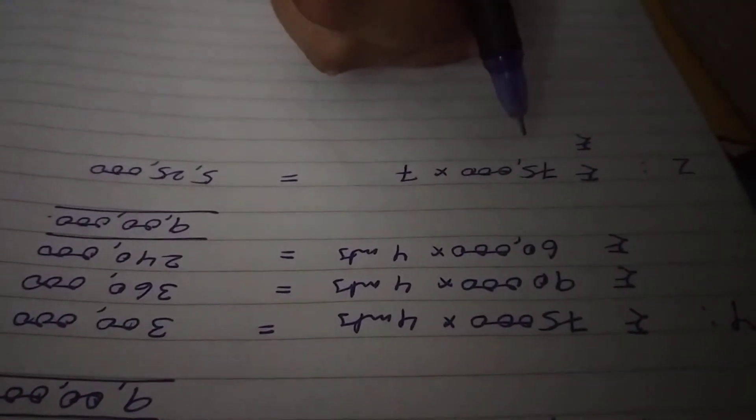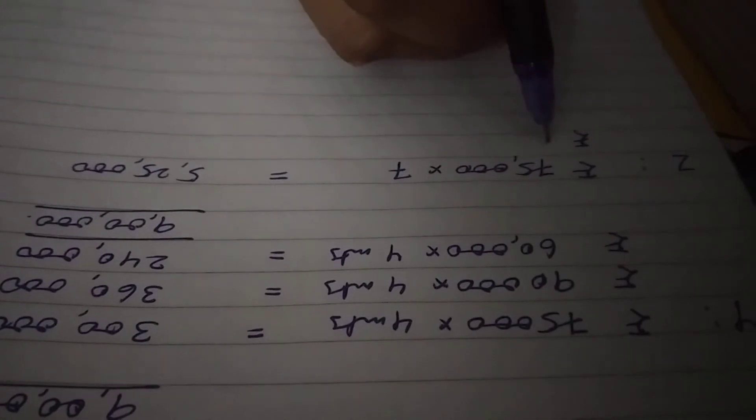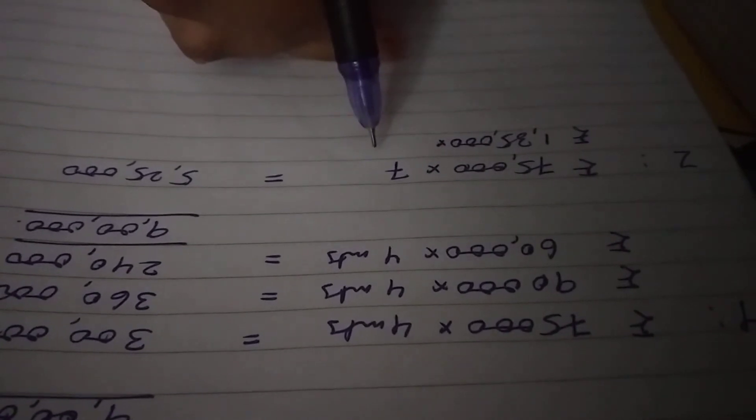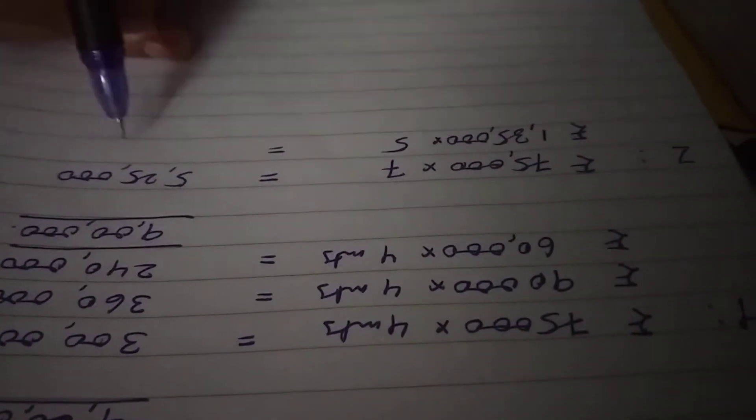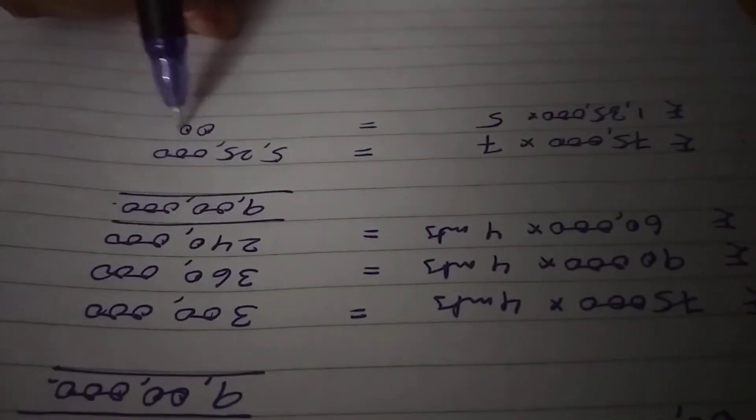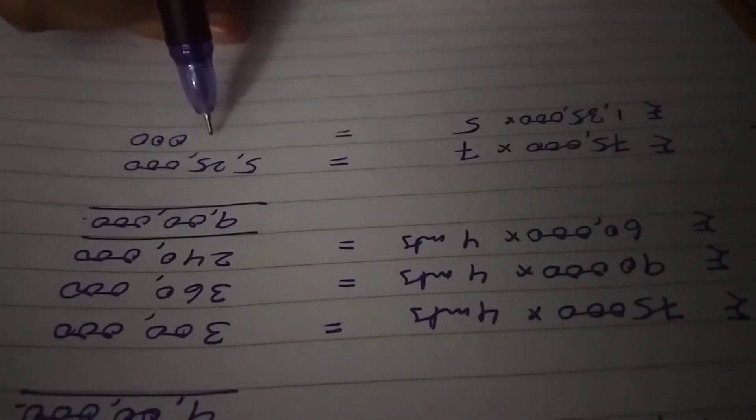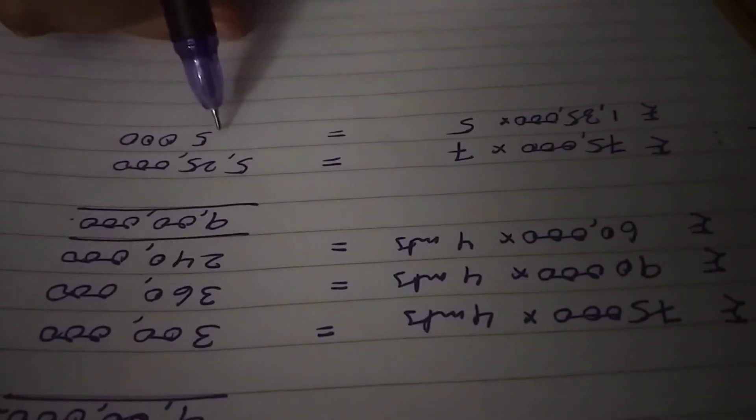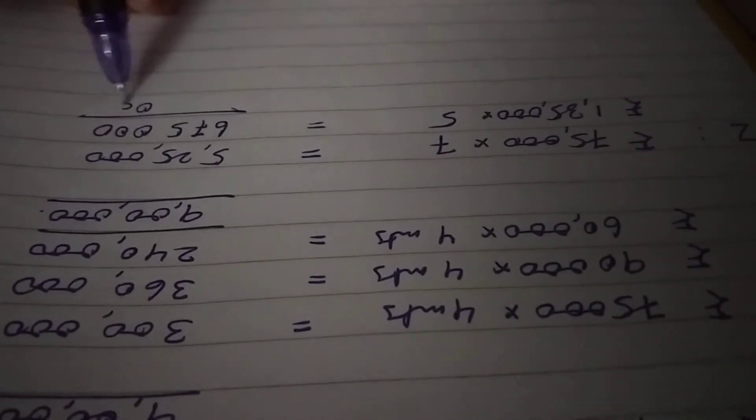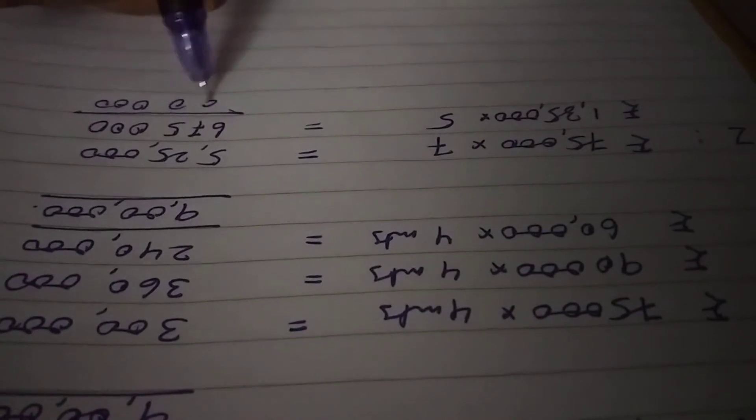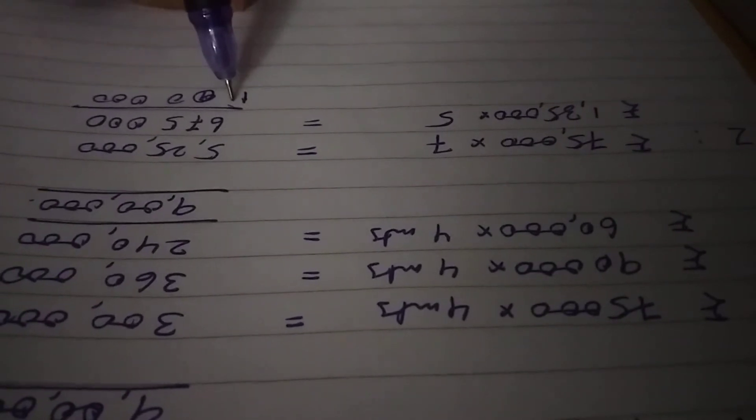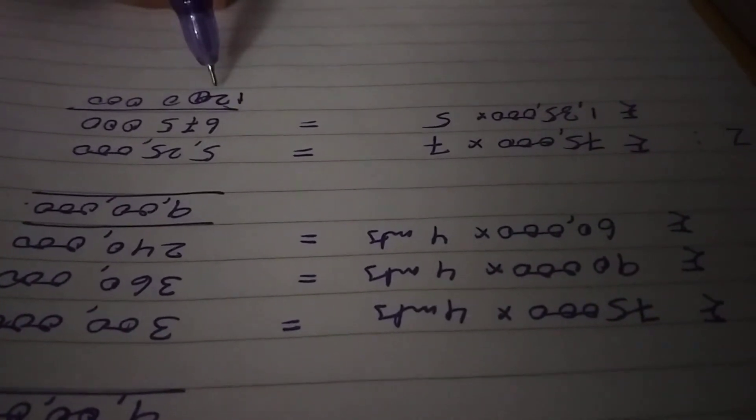And then increases by 60,000, so 75,000 plus 60,000 equals 1 lakh 35,000 into 5 months. 6 plus 5, I'm sorry 10, 12. Here 12 lakh.